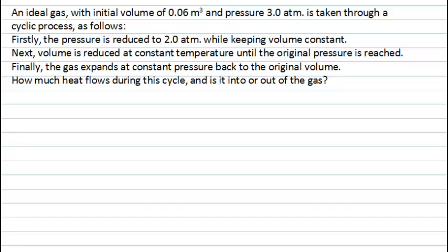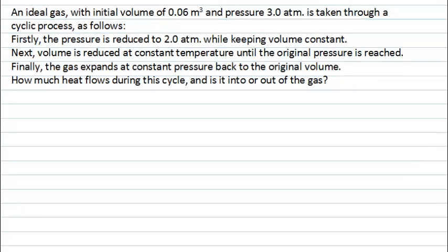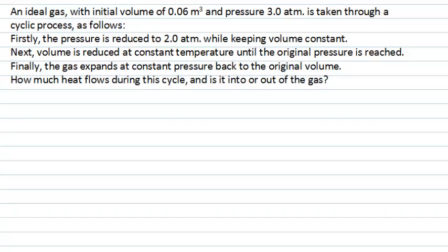This PhysCast is going to examine an example of using the first law of thermodynamics to analyze a cyclic process. We know some information about the initial state of our gas, and then the gas goes through three processes. If you read carefully, you'll see that the starting condition and the final condition are the same — that's what we mean by a cyclic process. It begins and ends in the same thermodynamic state.